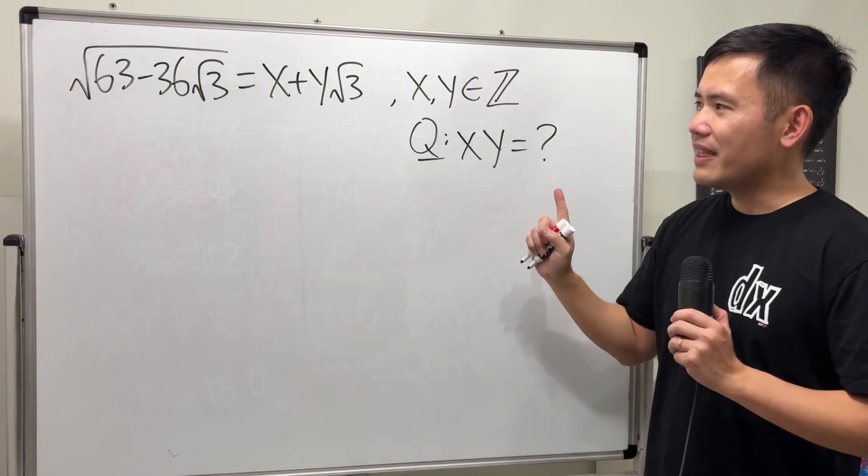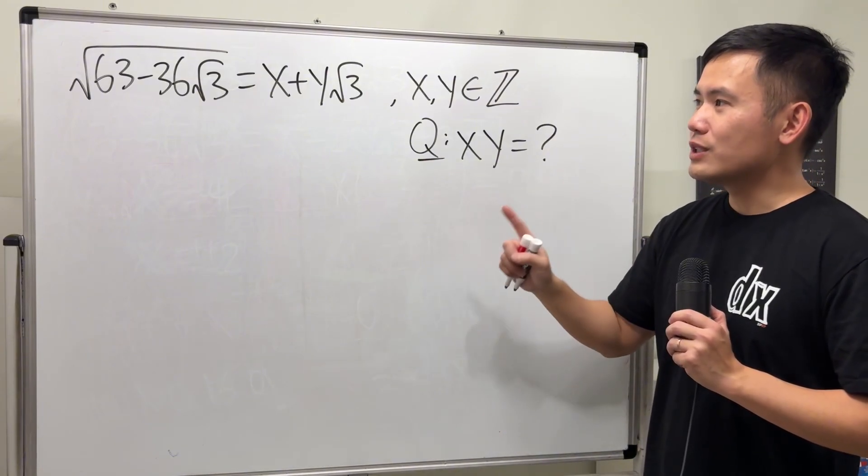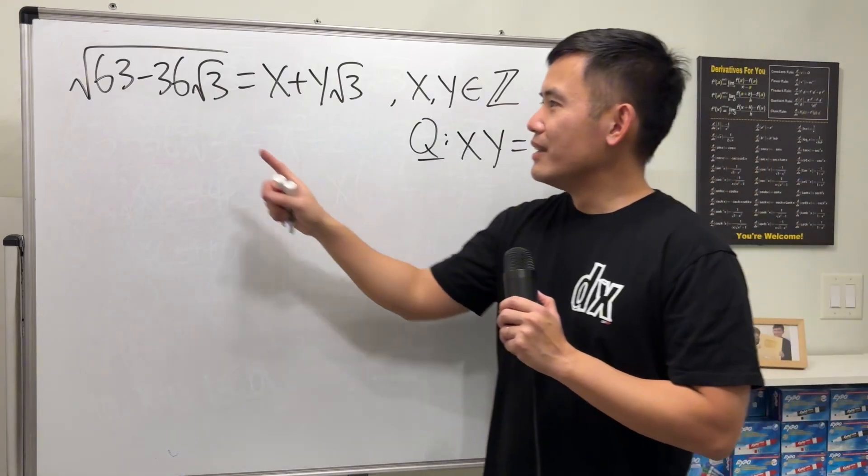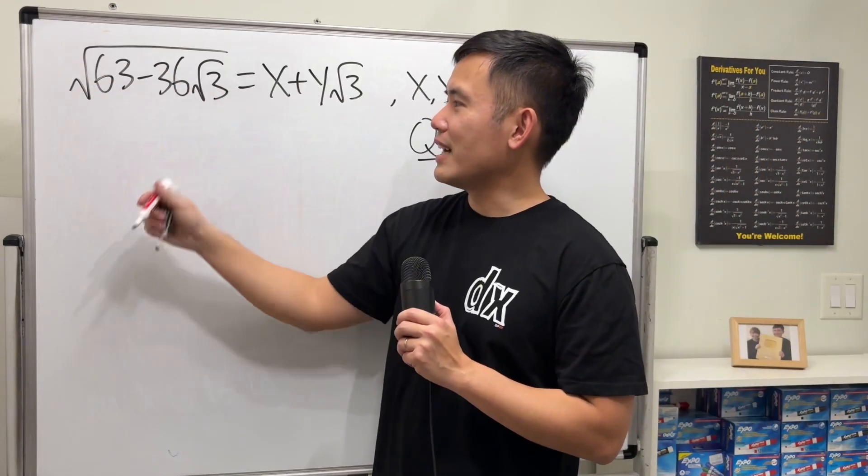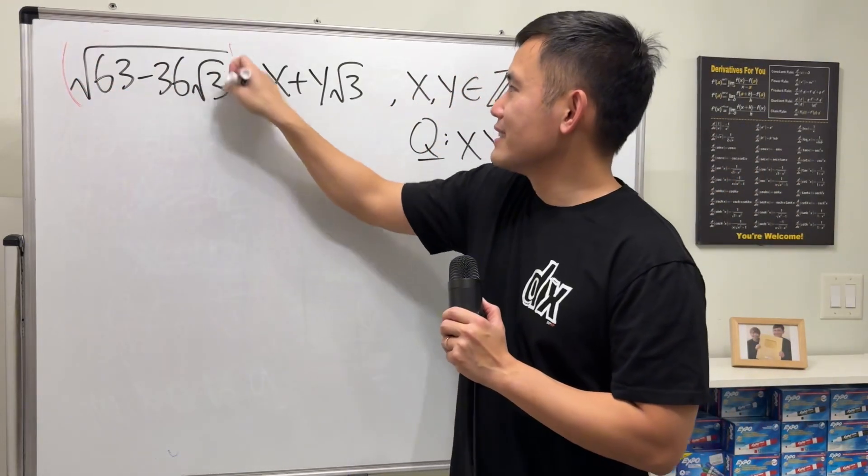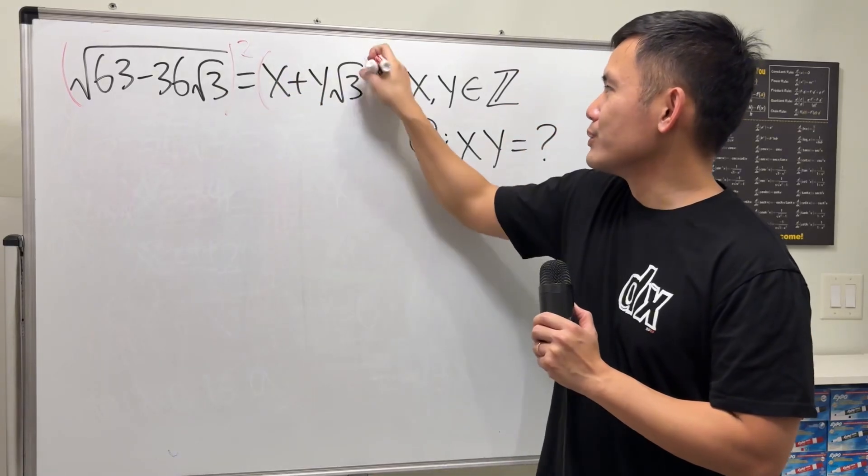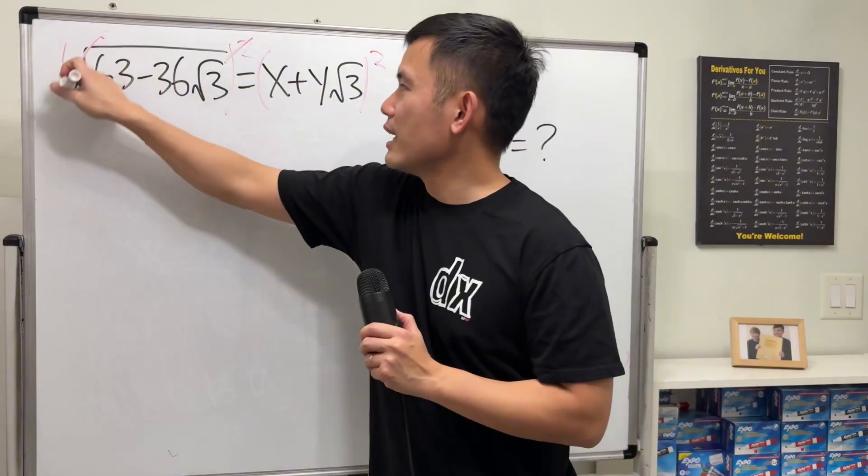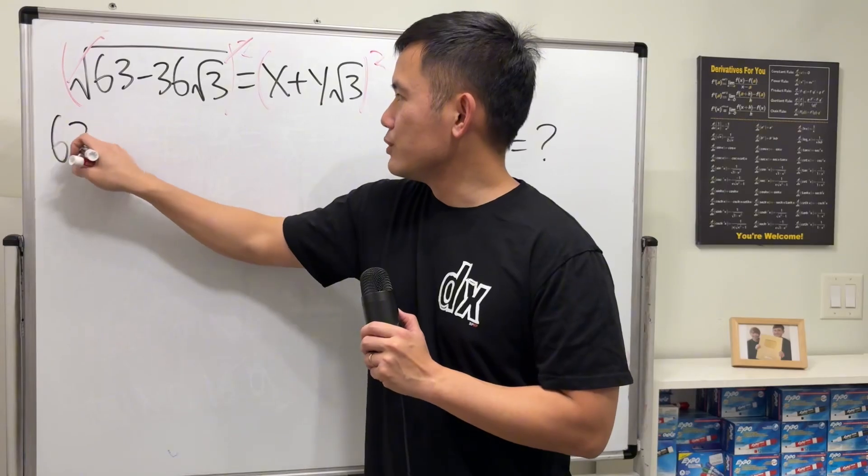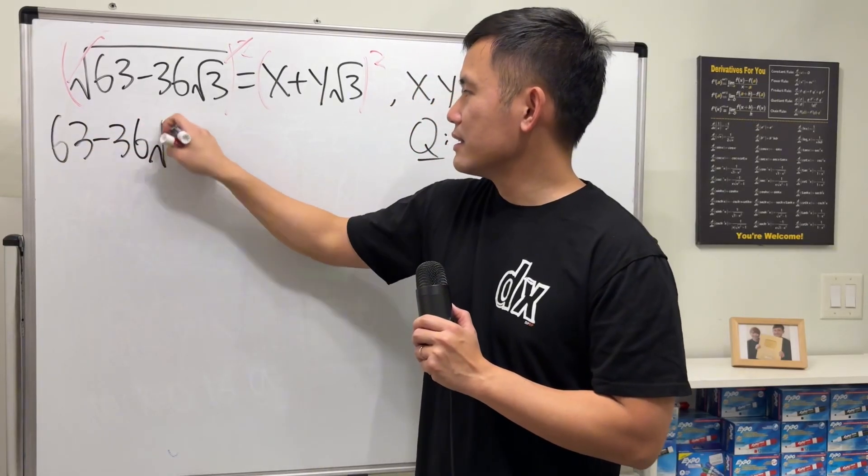This I think is the shortest way to do this question. Notice that we have this square root on the outside. Why don't we just square both sides so we can get rid of that square root? So we get 63 minus 36 times square root of 3.